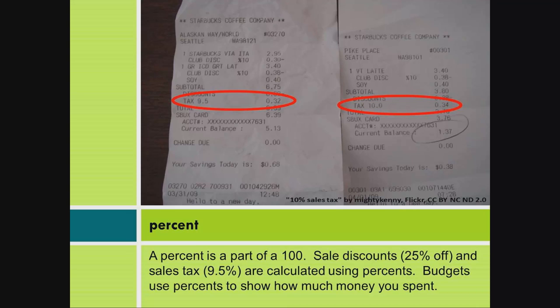Percent. A percent is a part of 100. Sales discounts like 25% off and sales tax like nine and a half percent are calculated using percents. Budgets use percents to show how much money you spent.